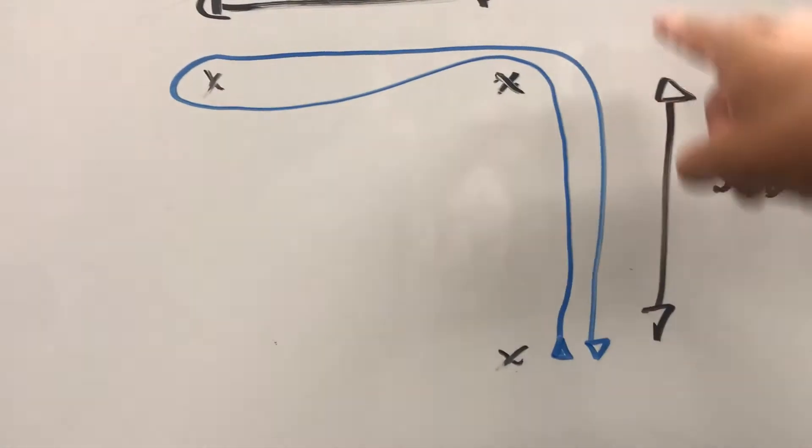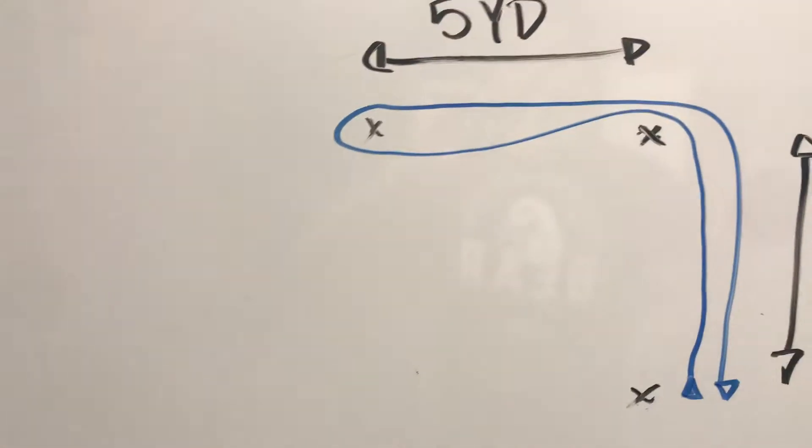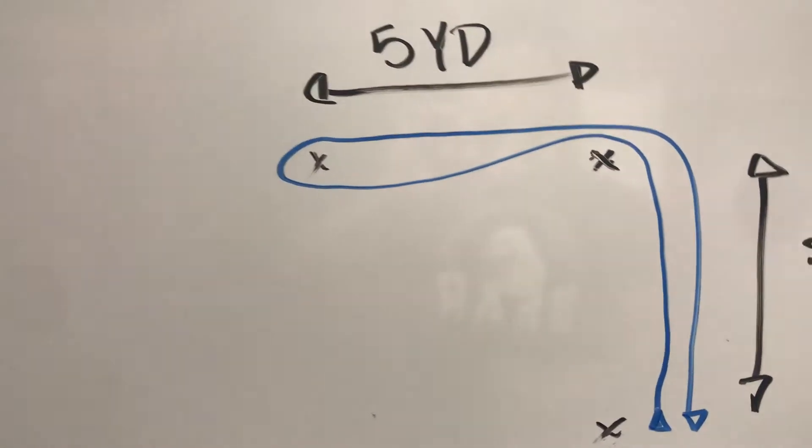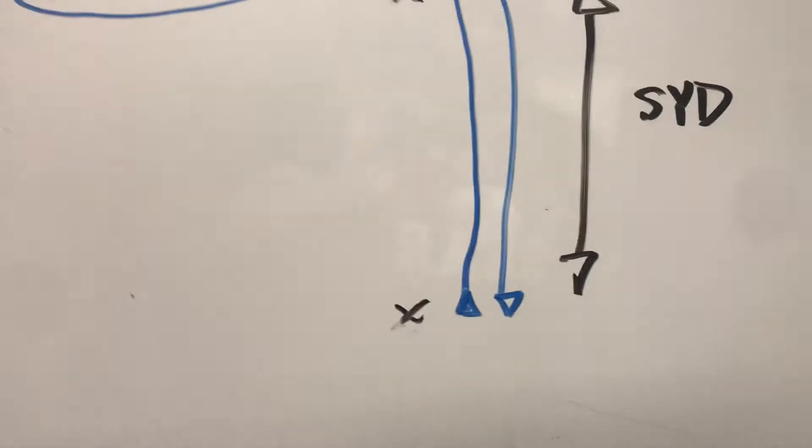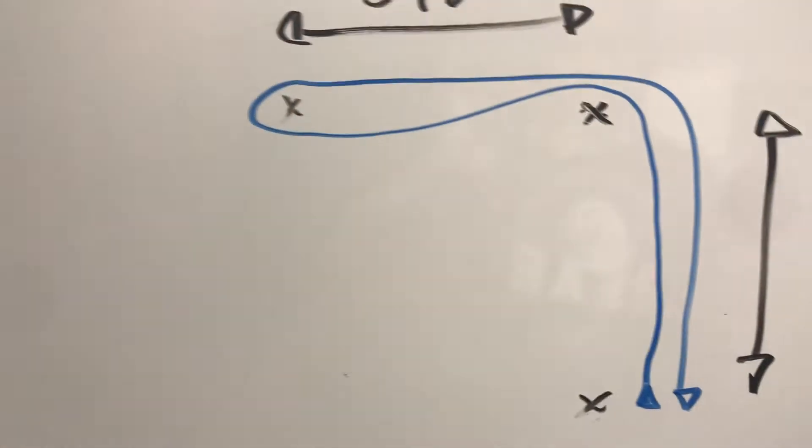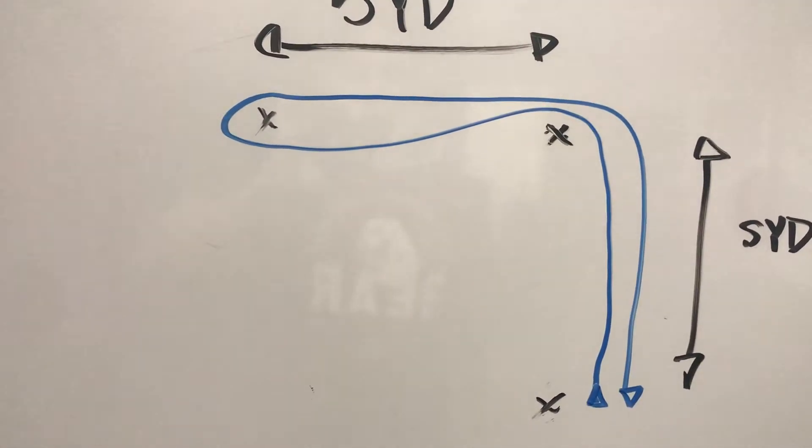You're gonna work your way around the top cone and weave around that third cone out there, and then bring it all the way back through that starting line. It's a great way to look at changing direction and your ability to maintain speed around that third cone.